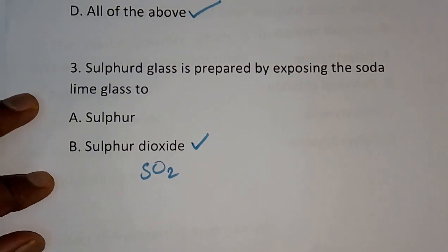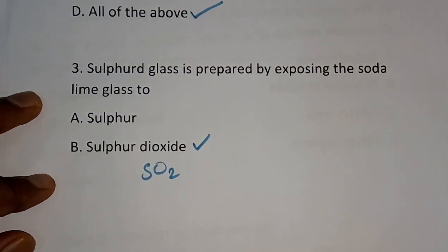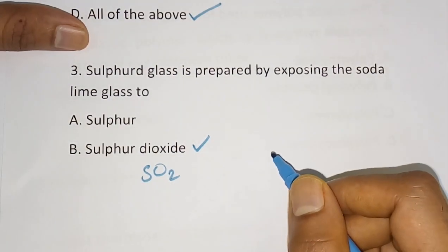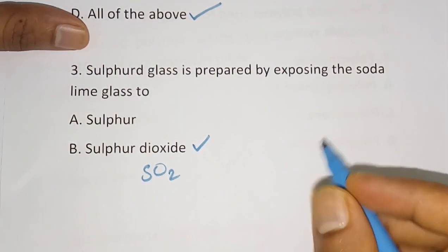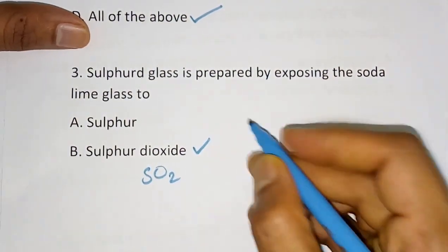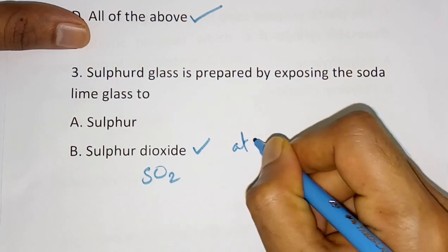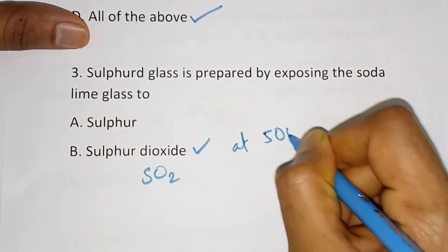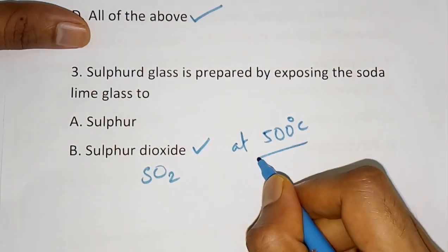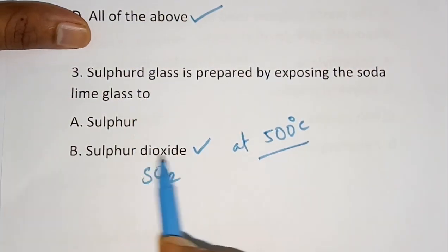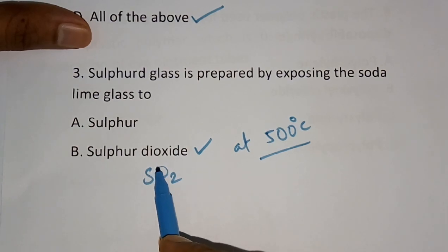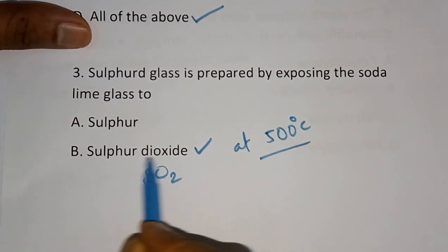In the preparation of sulphate glass, the soda lime glass is exposed to moist sulfur dioxide at about 500 degrees Celsius.